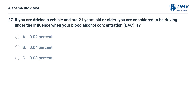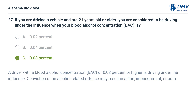If you are 21 years old or older, you are considered to be driving under the influence when your blood alcohol concentration is: A. 0.02%. B. 0.04%. C. 0.08%. Correct answer: C. A driver with a BAC of 0.08% or higher is driving under the influence. Conviction of an alcohol-related offense may result in a fine, imprisonment, or both.